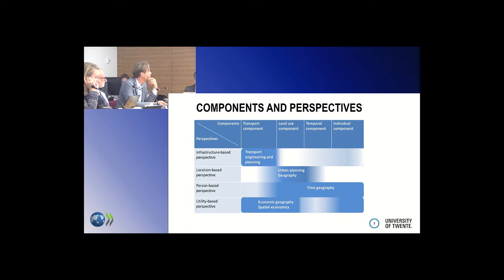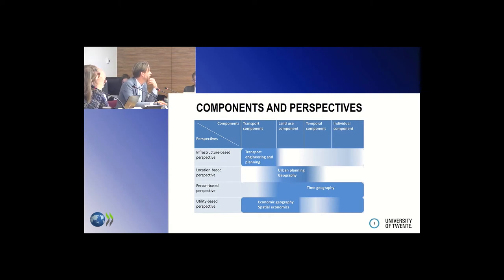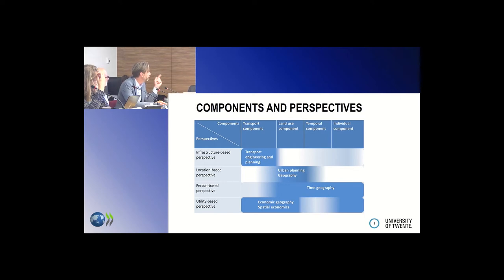When you look at accessibility, many focus on time, cost, and effort to get from A to B — these are the transport components. The land use component has been discussed a lot. There's also a temporal component because accessibility varies across the day. And there's an individual component — people have different needs, abilities, and opportunities to travel.